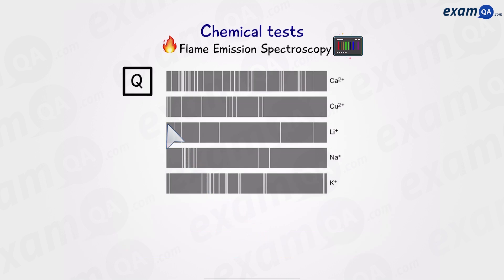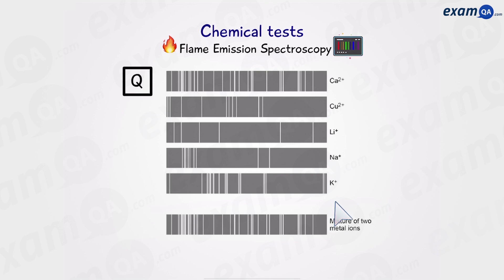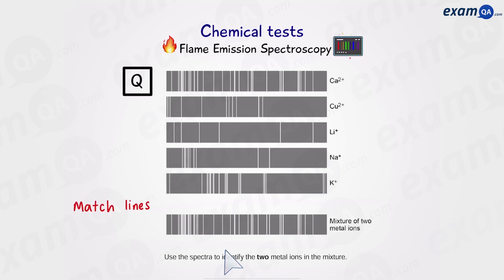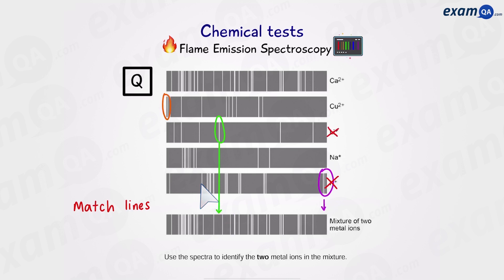Let's try an example question on flame emission spectroscopy. Here we have five different line spectra of five different metal ions, and over here we have a mixture of two metal ions in one sample. Use the five spectra to identify which two metals are in the sample. All we have to do is match the lines. A useful trick: look for lines that don't appear in the mixture. Potassium has a line that's nowhere in the mixture, so potassium is not present. Lithium also has a line not in the mixture, so we can ignore lithium. Copper likewise has a line not in the mixture. Since the question says identify two elements, it must be calcium and sodium — and all the lines will match up.